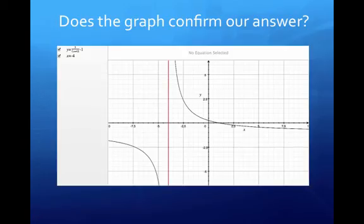Let's look at the graph. Does the graph confirm our answer? Well, notice we have our vertical asymptote at negative 4, the number we found from setting the denominator equal to zero.